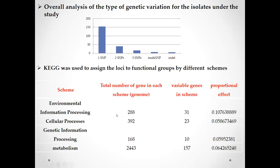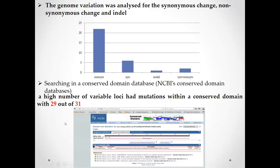When we calculated the proportional effect, we found that environmental information processing showed 0.1 — higher than other schemes. Environmental information processing genes are higher than other schemes because these genes code for outer membrane proteins. Being outer membrane proteins, they are in direct contact with the immune system, so they change their protein to escape the immune system. Therefore, we observed high variability in environmental information processing compared to other schemes.